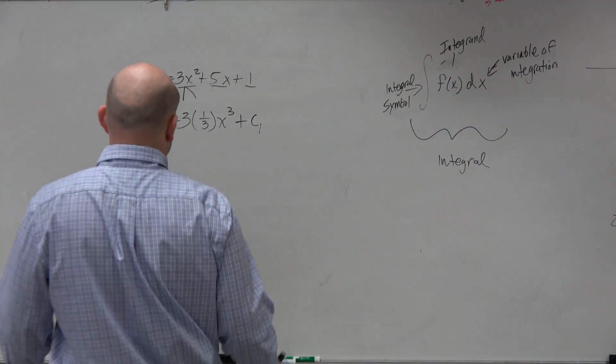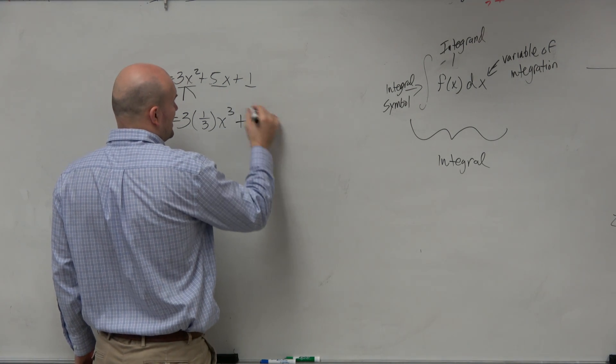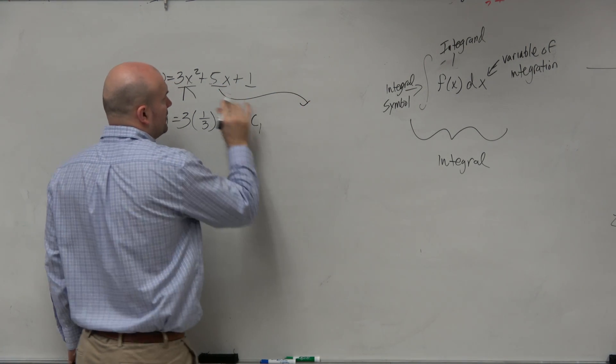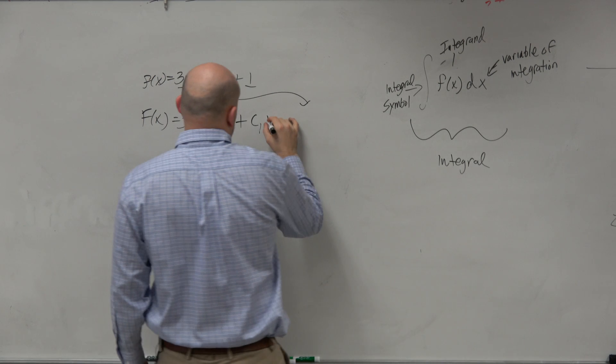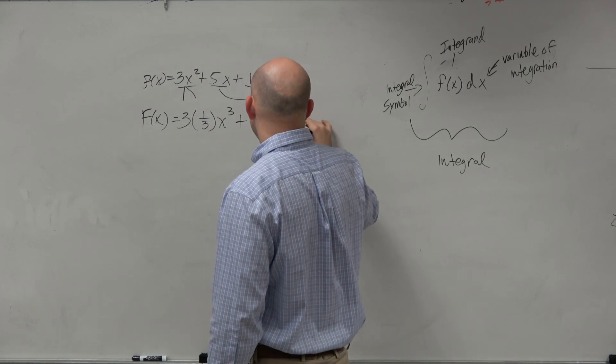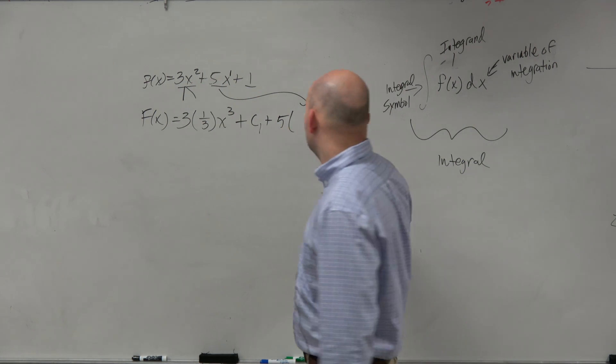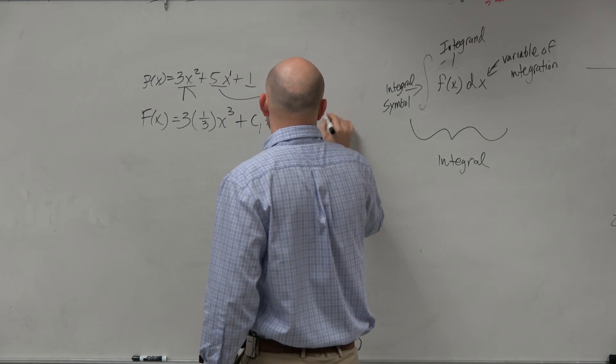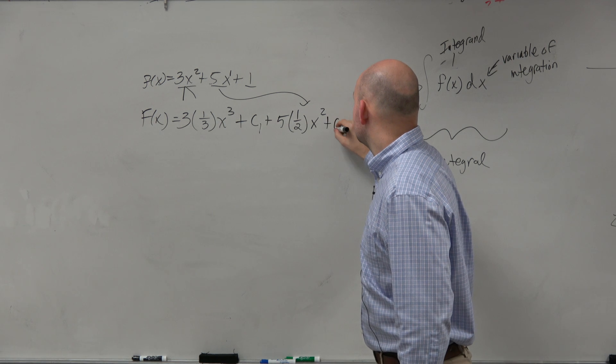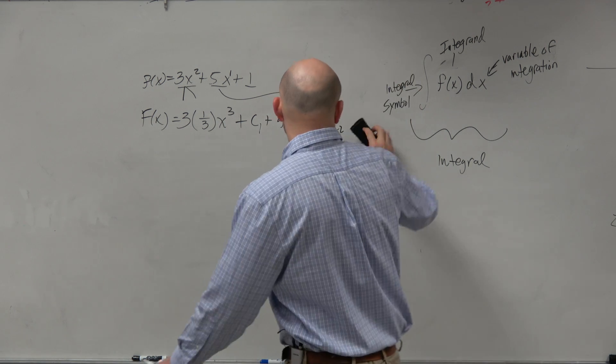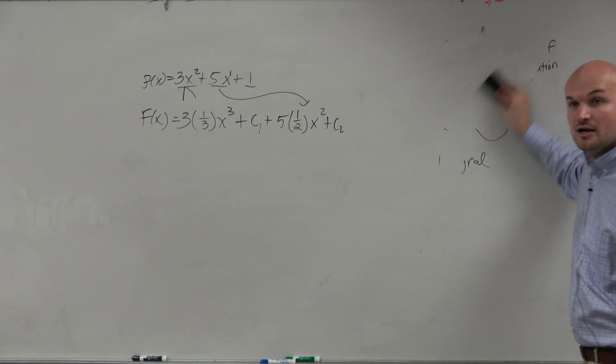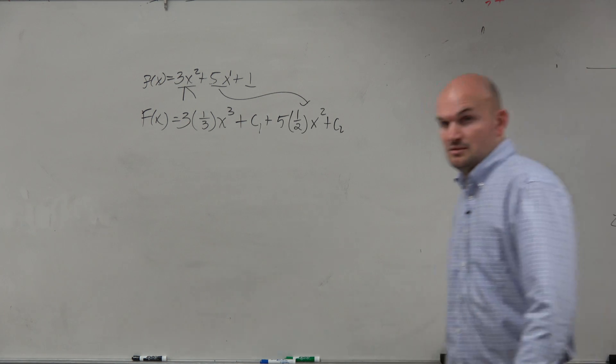Then let's do the next one. So the next form, 5x, that's going to be plus 5 times, if we take the power here as 1, so 1 plus 1 is 2. So that'd be 1 half times x to the second power plus c2. Yes? Doesn't that make sense? Everybody OK with the power rule?